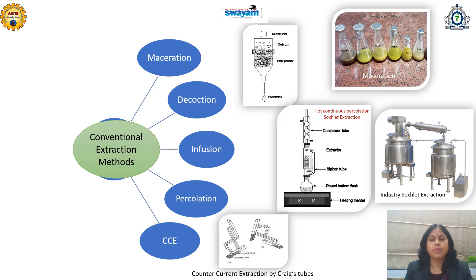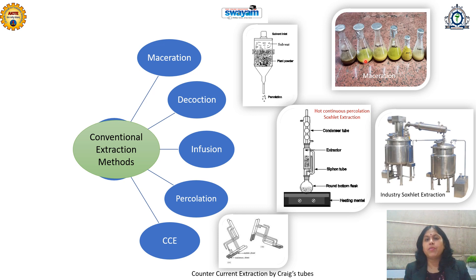Maceration literally means soaking — soaking of the plant material, either fresh or dried, in a specific solvent. As per the Indian Pharmacopoeia 1966, maceration should be carried out for seven days with intermittent shaking or stirring. After seven days, it needs to be filtered and evaporated if required. The extract can be utilized as macerated, or if needed in dry form, it is evaporated to dryness.